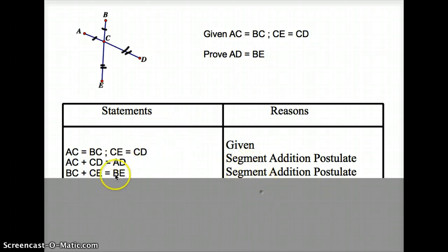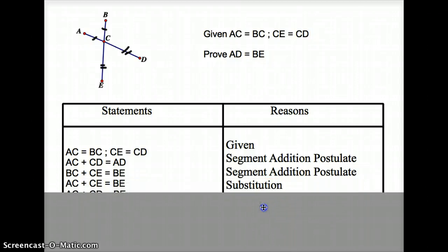Now, what we need to do is get these two to look exactly the same. If we could do that, then we've proven that AD equals BE. So if we think about it, what is BC equal to? Well, BC is equal to AC, so I can substitute AC for BC.